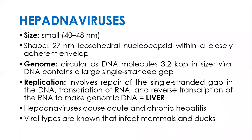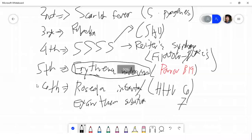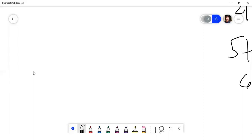Hepadnaviridae: double-stranded DNA, icosahedral, and enveloped. Hepatitis B is classified here. Regarding hepatitis viruses, while they are all named 'hepatitis,' they are not all classified in the same family. Hepatitis A is classified under Picornaviridae (RNA virus). Hepatitis B is under Hepadnaviridae — the only DNA hepatitis virus. Hepatitis C is under Flaviviridae. Hepatitis D is under Deltaviridae. Hepatitis E is under Hepeviridae, formerly classified as Caliciviridae.